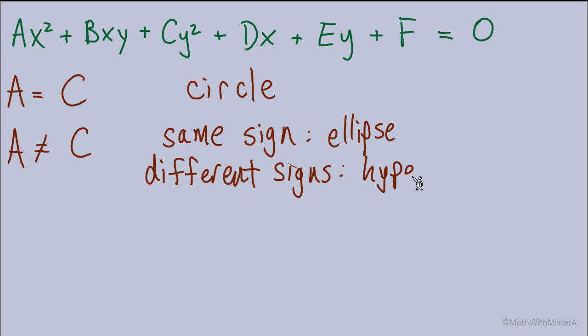If they have the same sign, both positive or both negative, then we have an ellipse. But if they have opposite signs, one positive, one negative, we'll end up with a hyperbola.